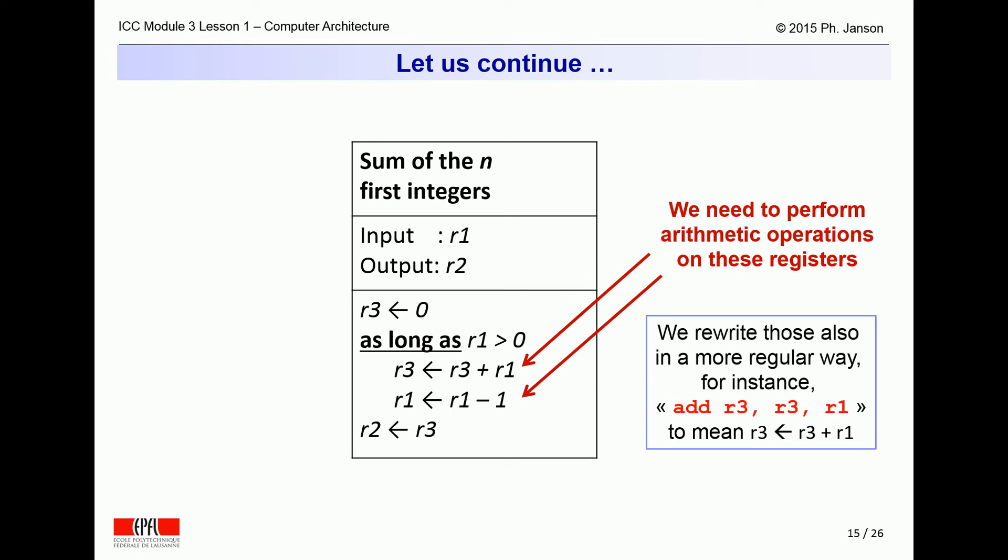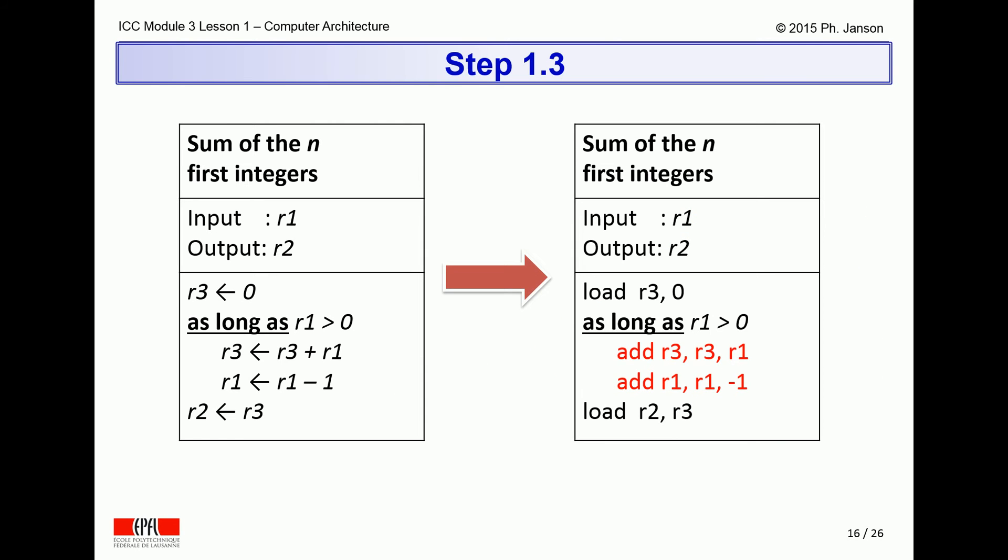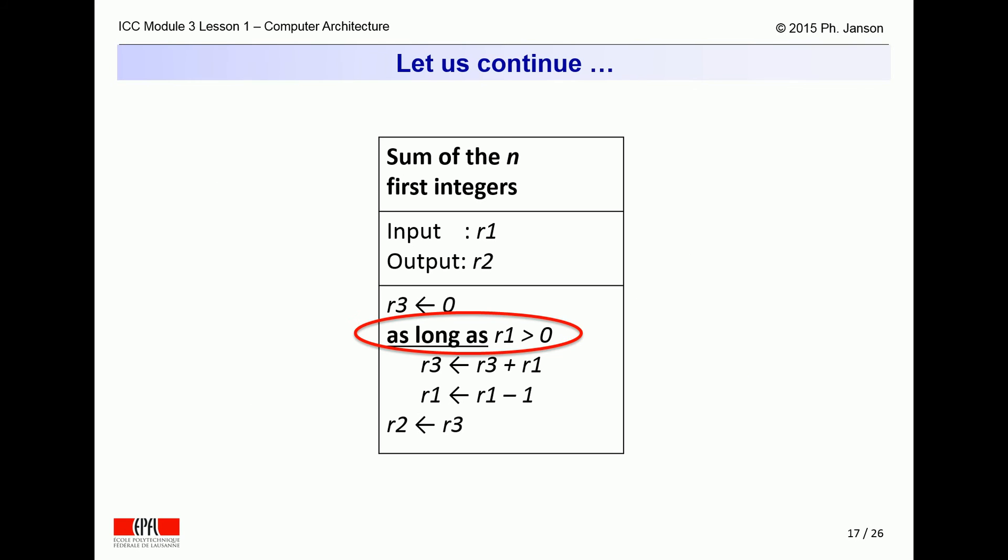We could also have written subtract r1, r1, r1, 1 to mean subtracting 1 from r1 and recording the result into r1. With this new conventional formalism, the original algorithm is rewritten once more as on the right side of this slide. So now we know how to instruct a computer to assign or compute values for registers.